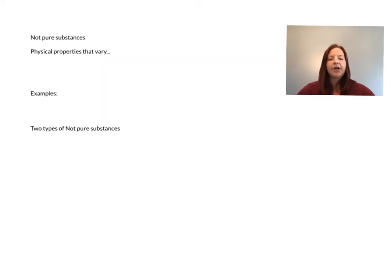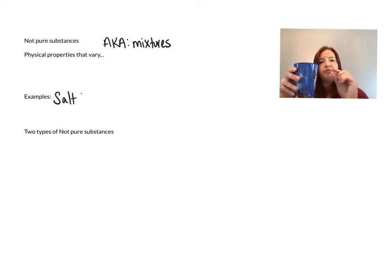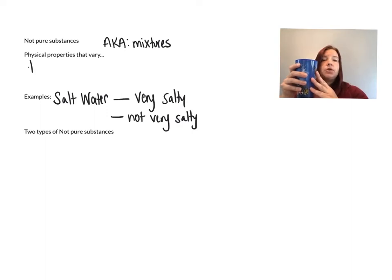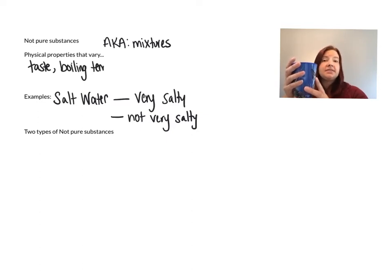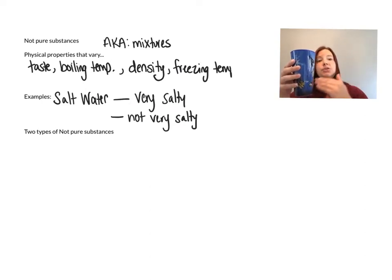We can also classify matter as a not pure substance — also known as mixtures. When we have a mixture, the physical properties are going to vary. For example, if I make a mixture of salt water, I could put a lot of water and very little salt, or I could add more salt so it's very salty. I can vary how dense that water is by having more or less salt, and I can vary the taste of that salt water mixture by how much salt I put in.